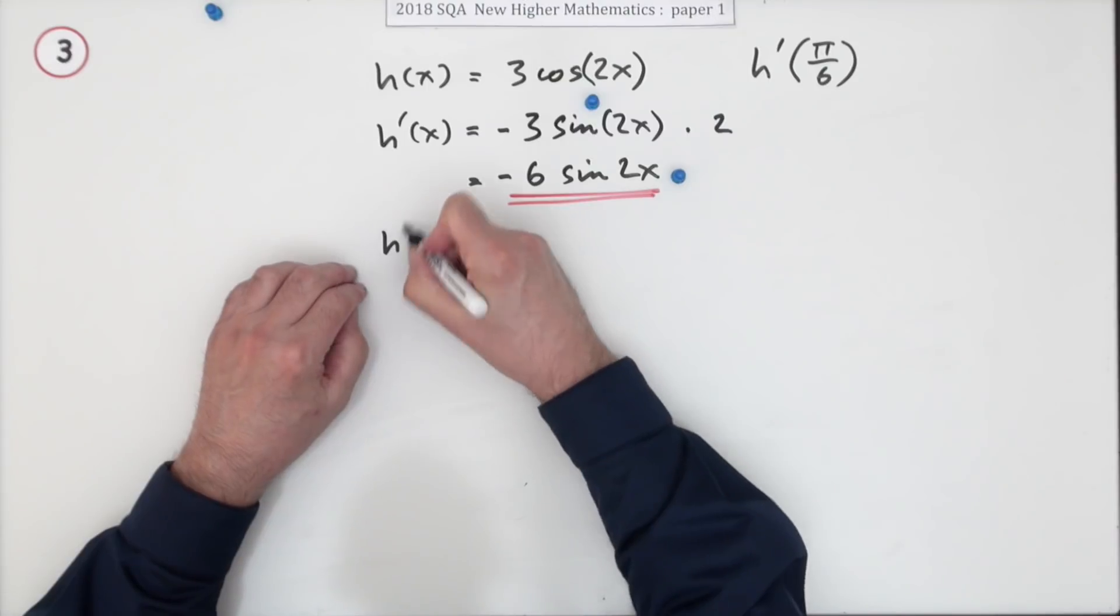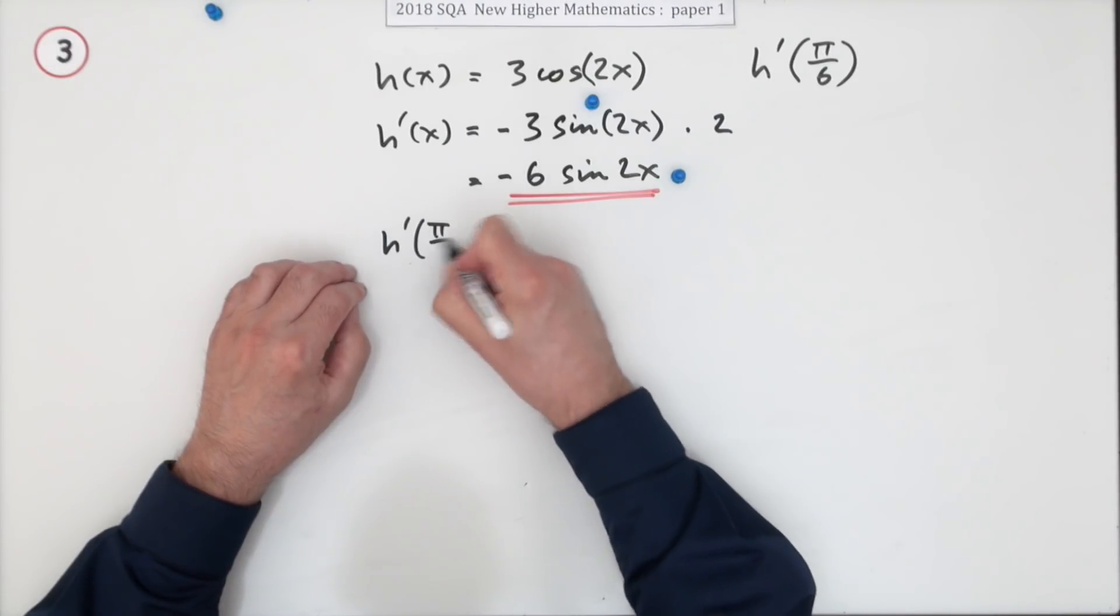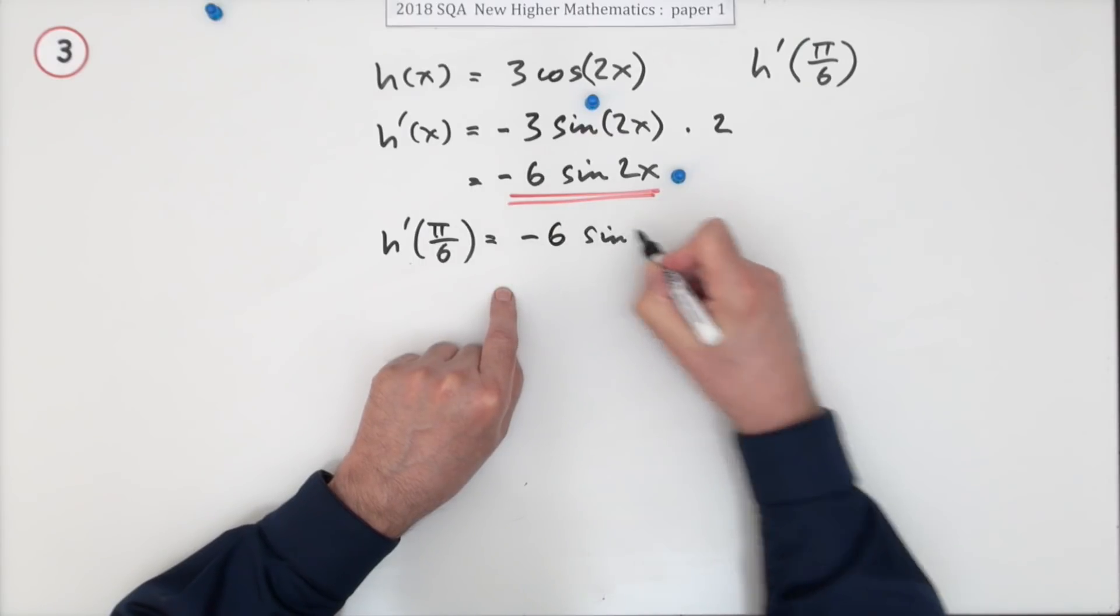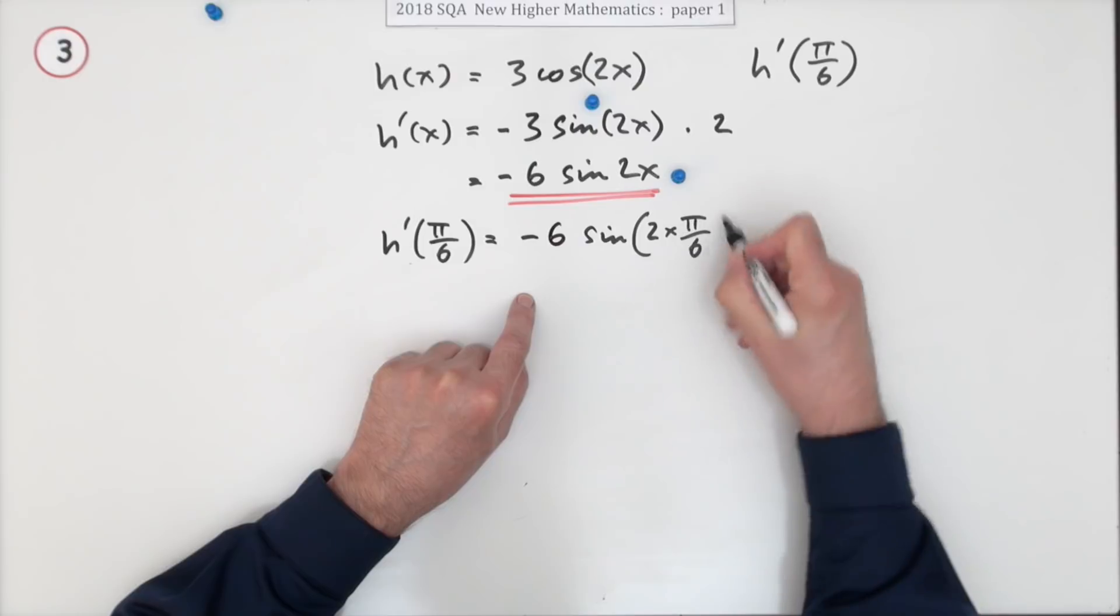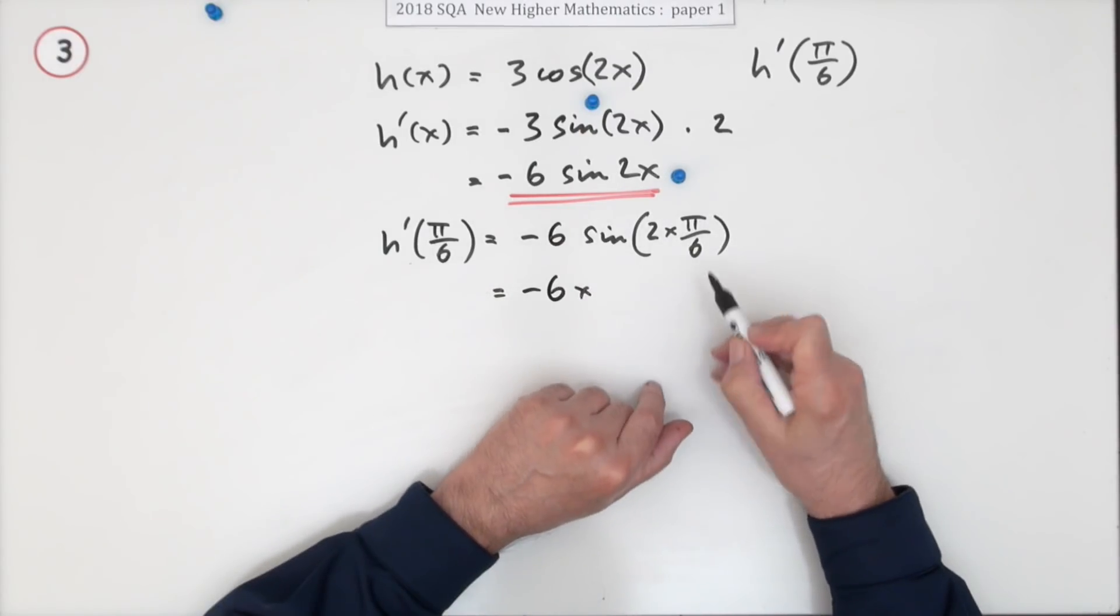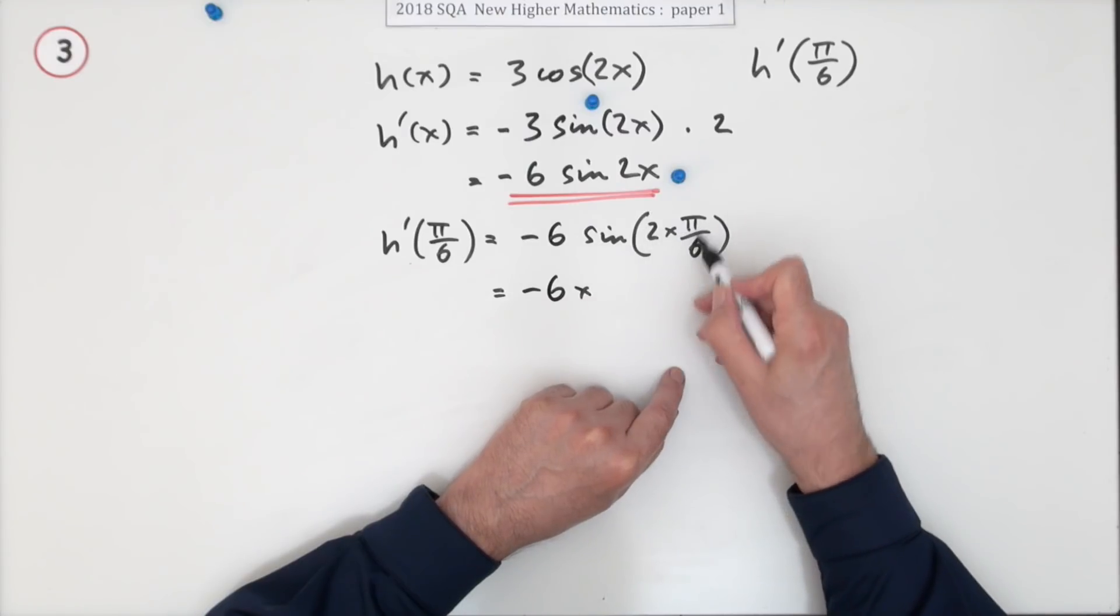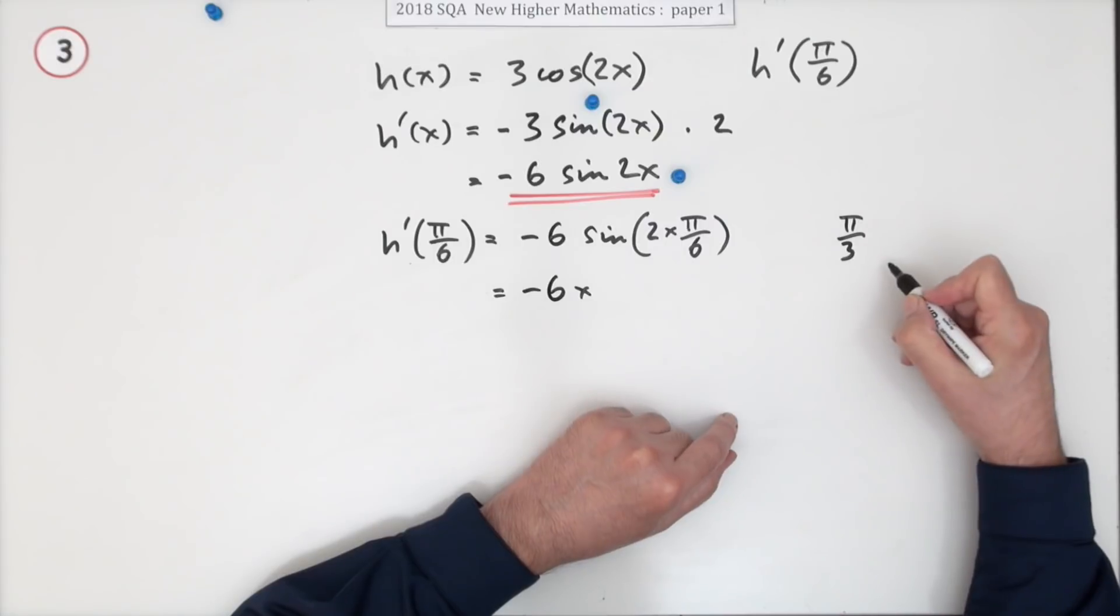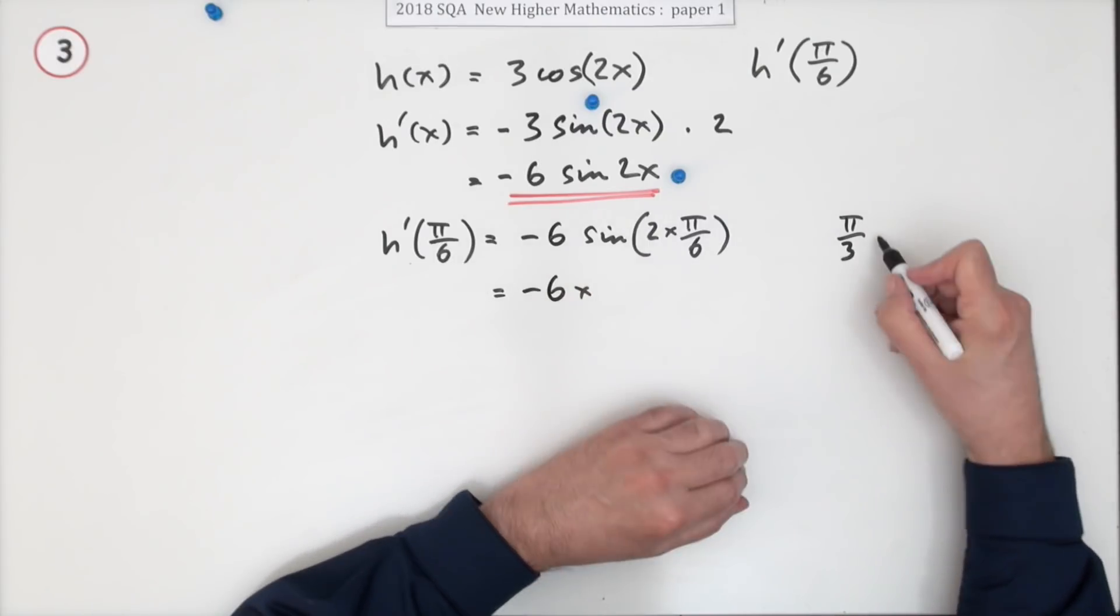So when you have to evaluate this at π/6, it means you've got negative 6 sine 2 times π/6. Now 2 times π/6 means it's π upon, cancel it down, π/3. You either remember that yourself or remember π/3 is the same as 60 degrees.